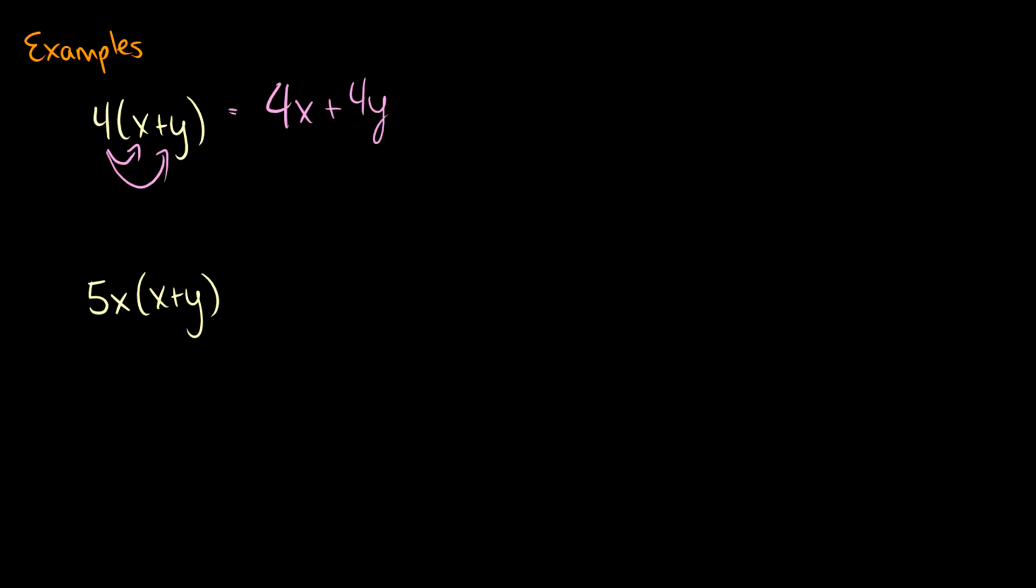Now this time, we have a variable 5x on the outside. So we have to distribute that 5x to the x, then we have to distribute that 5x to the y. So what we get is 5x times x plus 5x times y.